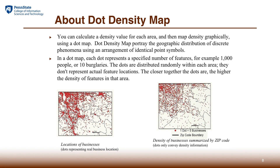Let's talk about dot density maps. Dot density basically uses dots to represent the idea of density rather than the real location. For example, the map on the left shows the actual location of businesses, where the coordinates represent real business locations. However, if we represent the density idea, we can use a distribution of dots where the number of dots reflects the density in a particular area, but the dot locations do not reflect real business locations.